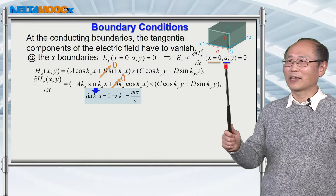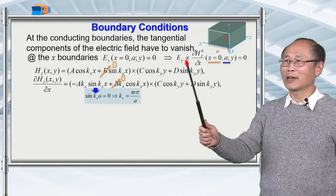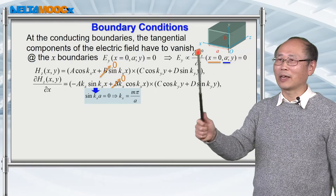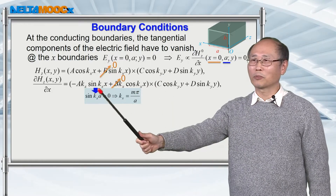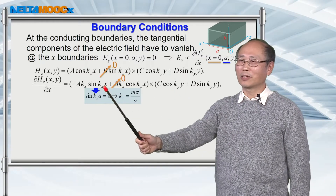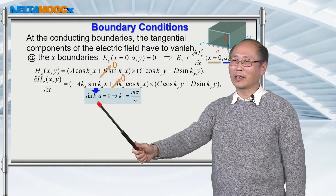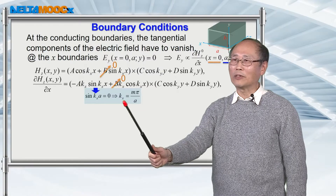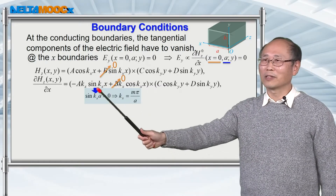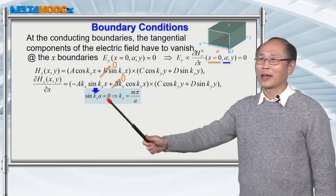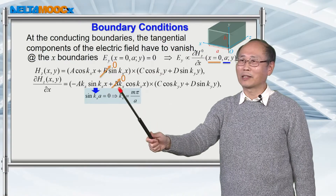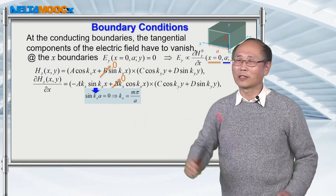Now you have a second boundary condition at x equal to a, where Ey, the tangential component of the electric field, has to be equal to 0. Substituting x equal to a into the expression and keeping the y-dependent part unchanged, you get sin(kx·a) equal to 0. So you deduce kx equal to mπ/a. You also cross out the corresponding term in Hz because coefficient B was set to 0.